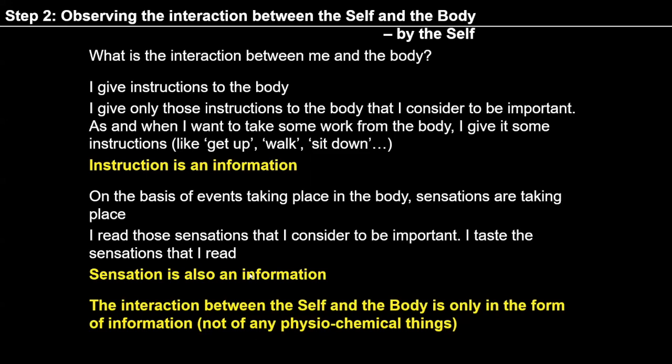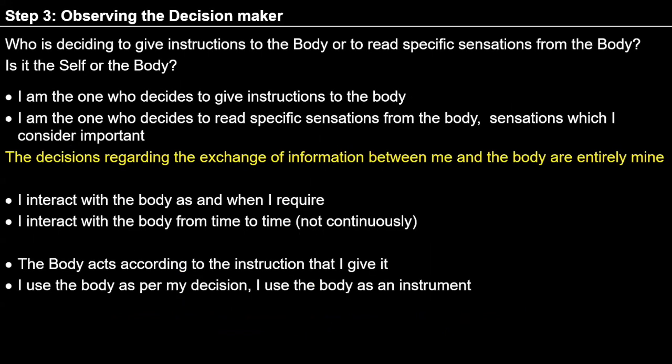If we have observed Step 2 properly, we can move to Step 3. In Step 3, we are trying to observe who is the decision maker — who is deciding to give instruction to the body or to read a specific sensation from the body. We are trying to identify who makes decisions: is it the self or the body?